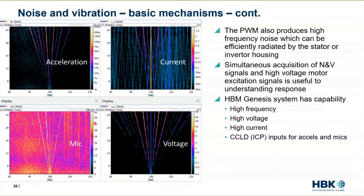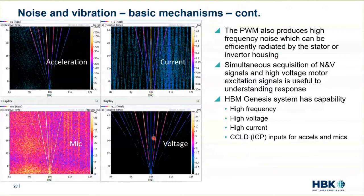If I wanted to look at what causes those, this is a color map of the current of one of the phases of that motor, and this is a color map of the voltage of one of the phases. Looking at a given line, you might notice that it does not have a strong current counterpart but does have a strong voltage counterpart, while another line might have a strong current counterpart but a low voltage counterpart.